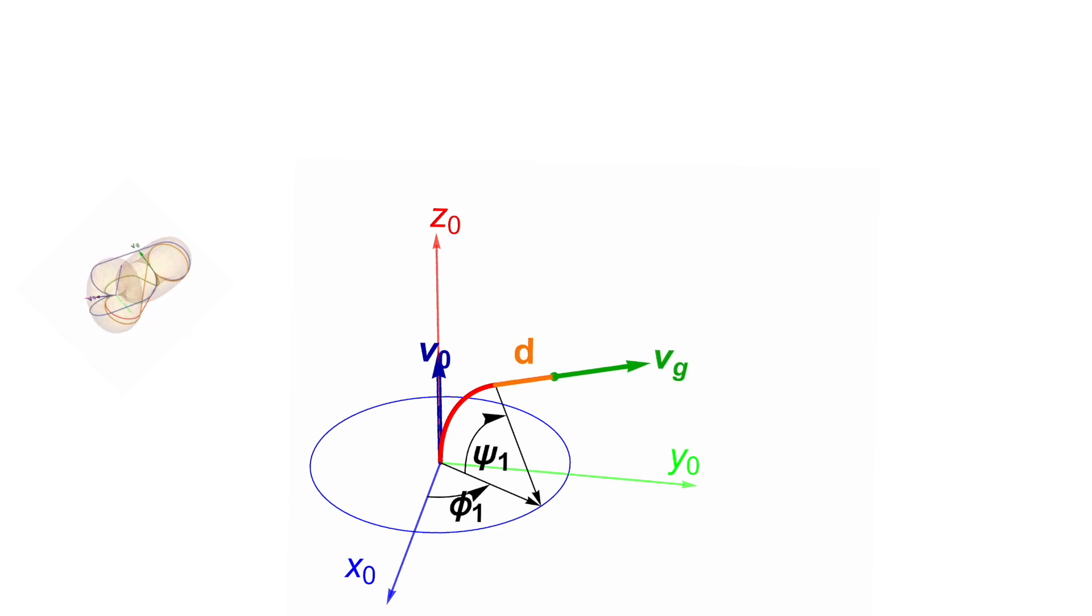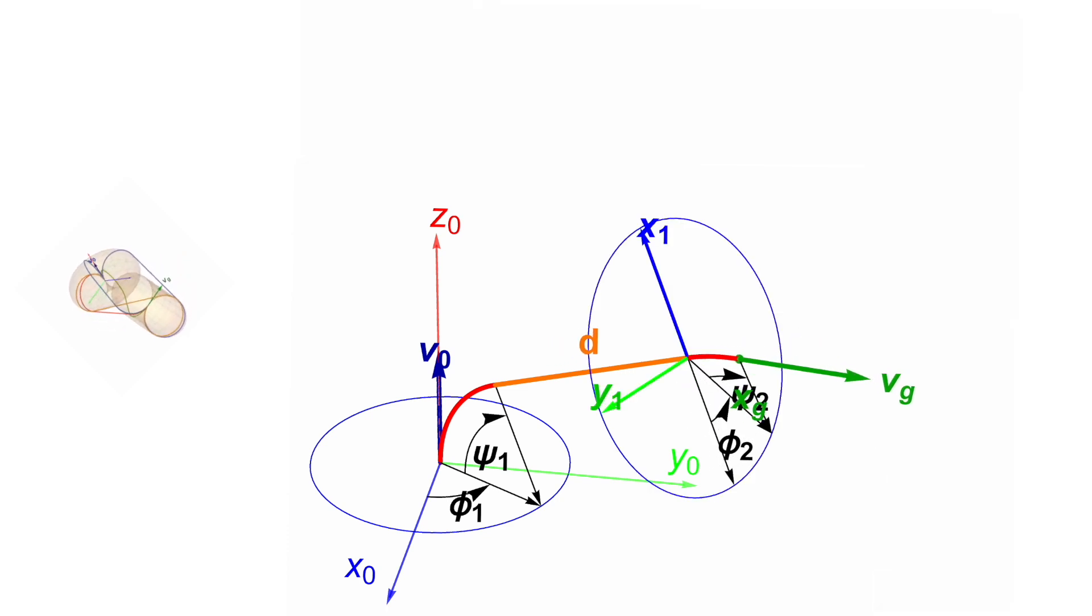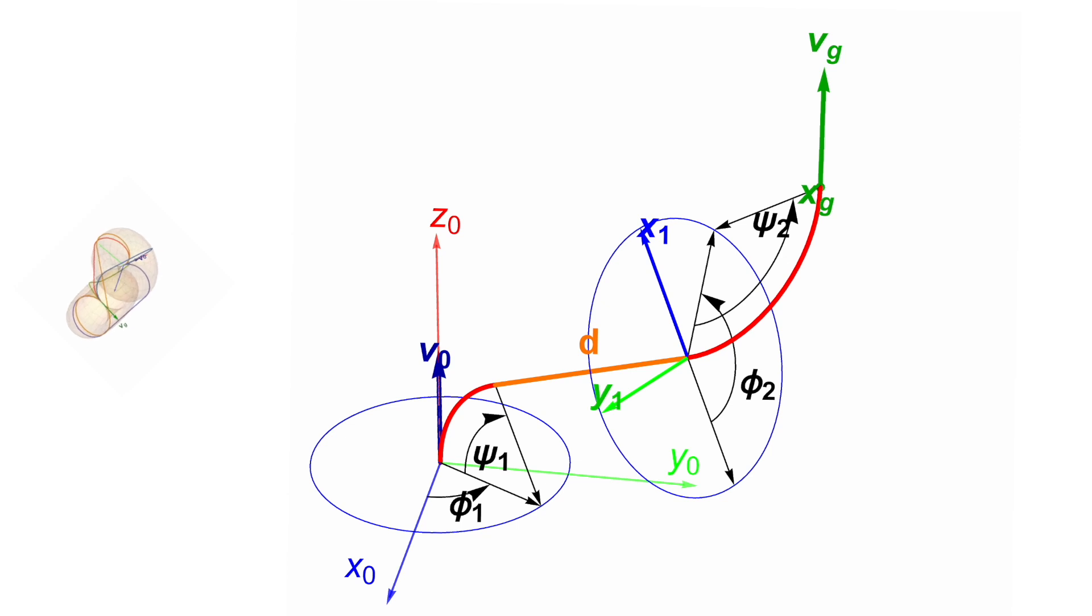Followed by the straight path with length d, and finishing with the second C path with bending angle psi2 at orientation phi2 with regard to the x1, y1 plane.